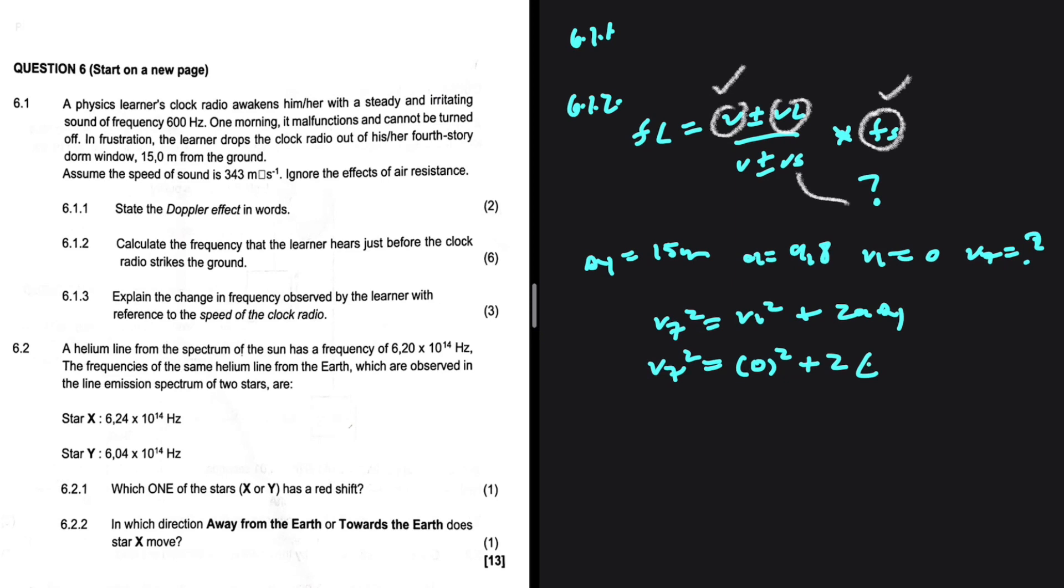Let's take up as positive. So our acceleration will be -9.8 and ΔY will be -15. And if we take square roots on both sides, we're going to get VF being equals to 17.15 m/s. And just like that, we have the velocity of the sound source.